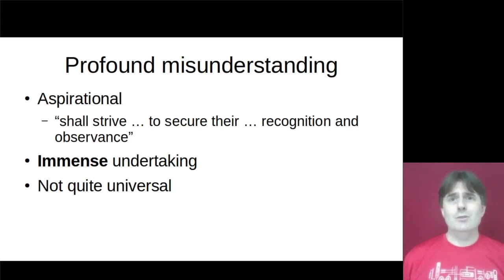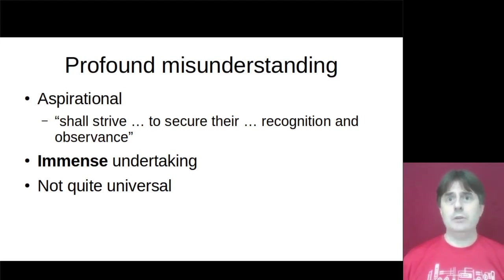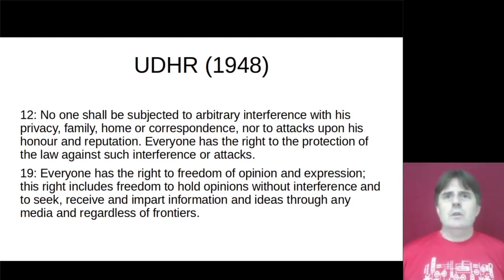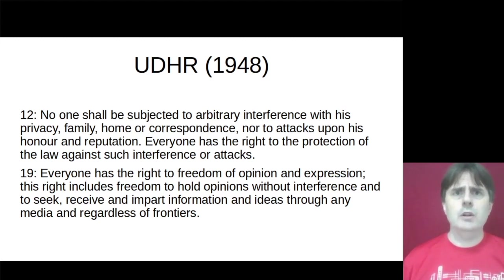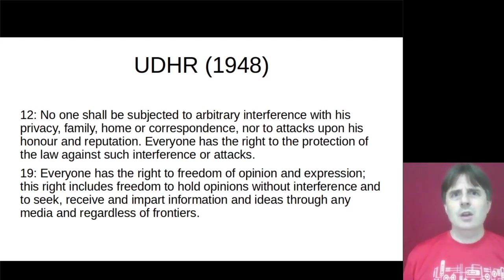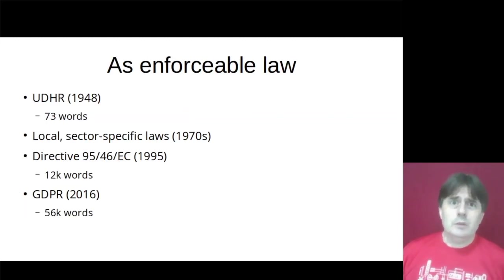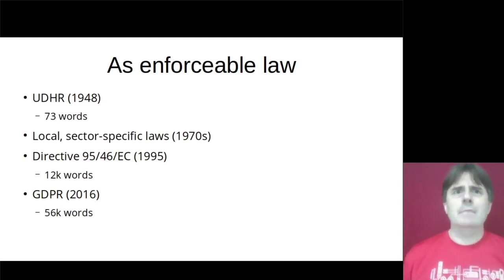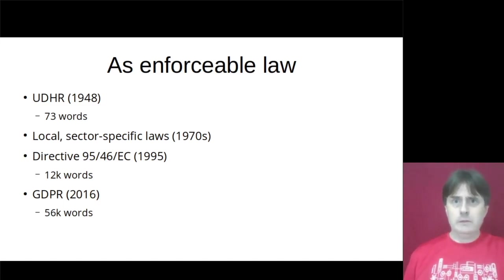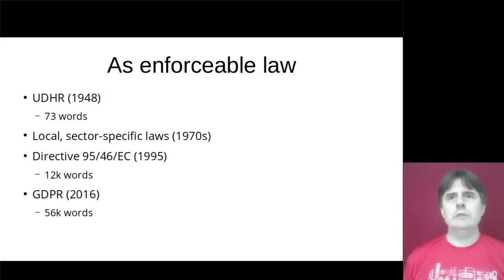UDHR also, although it starts with the word 'universal,' is not quite universal — there's a very large identified minority of people for whom it doesn't apply. I won't go through all 30 articles, but I'll touch on the two that touch my work: Article 12, which deals with interference in privacy, correspondence, honour, and reputation; and Article 19, which is about seeking and imparting information, particularly with respect to politics. That's about 73 words. To turn that into forcible law took some time. Even though the processing of personal data was a significant factor in the Holocaust, it was more than two decades before the first localised and sector-specific laws implementing this part of UDHR began to appear.